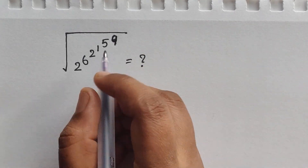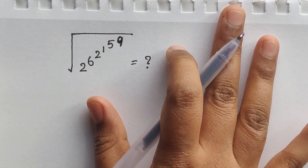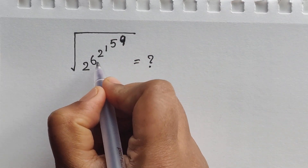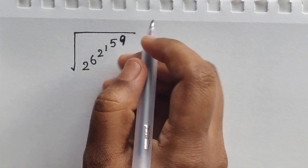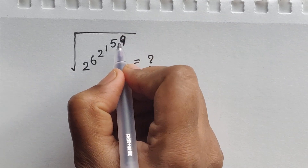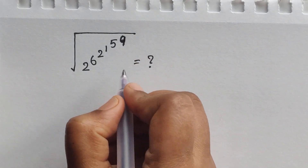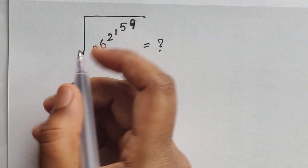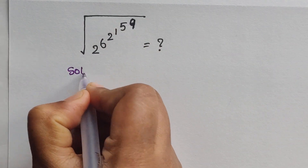Hello everyone, welcome back to the channel. Here we have one problem: the square root of 2 to the power of 6, times 6 power 2, times 1 power 5, times 5 power 9. How do we solve this problem without using a calculator? Let's see the solution.